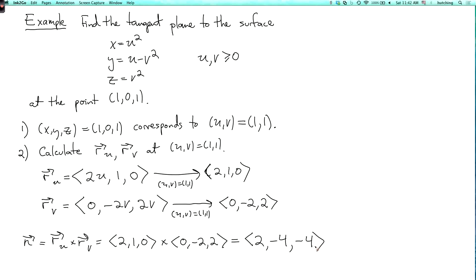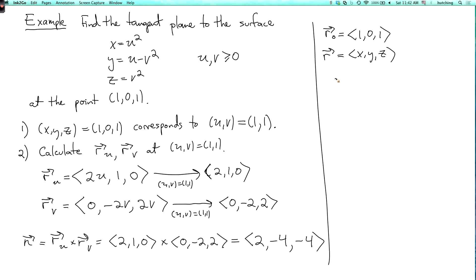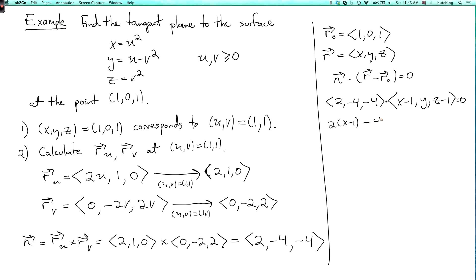Then we write down the plane. The point r0 is (1, 0, 1), and the general point is r = (x, y, z). The equation is n dot (r minus r0) equals 0, which expands as (2, -4, -4) dot (x-1, y, z-1) equals 0. Multiplying out the dot product gives 2(x-1) minus 4y minus 4(z-1) equals 0.